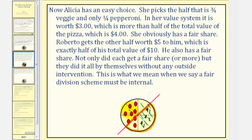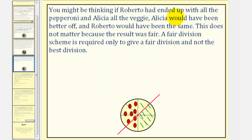Roberto gets the other half, which for him is worth five dollars — exactly half of his total value of ten dollars, which is his fair share. Not only did each of them receive a fair share or more, but they did it without any outside intervention. This is what we mean when we say a fair division scheme must be internal. Even if giving Roberto all the pepperoni and Alicia all the veggie would have been better for Alicia, it doesn't matter — a fair division scheme is only required to give a fair division, not the best division.